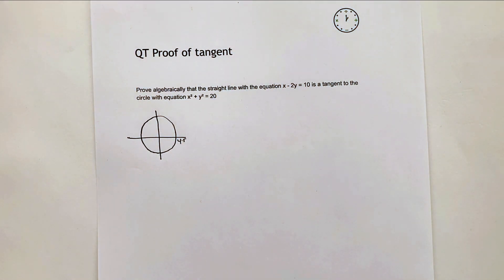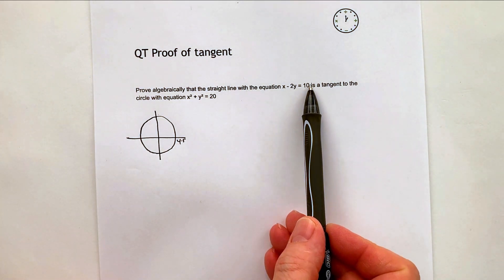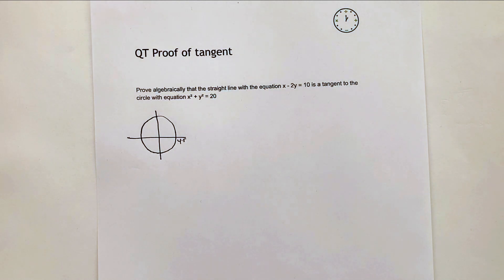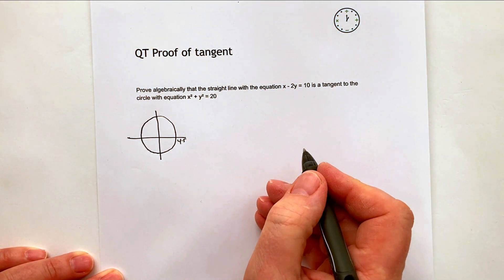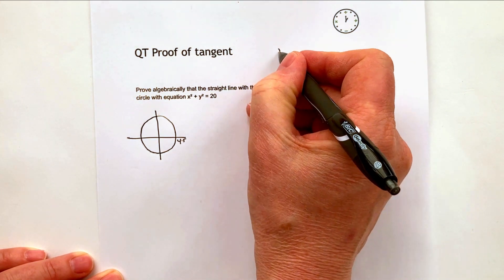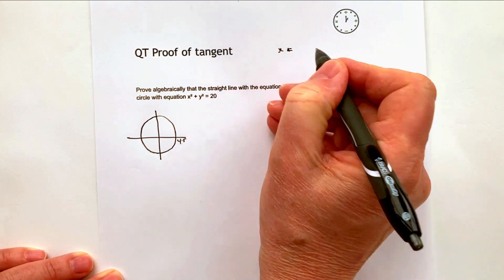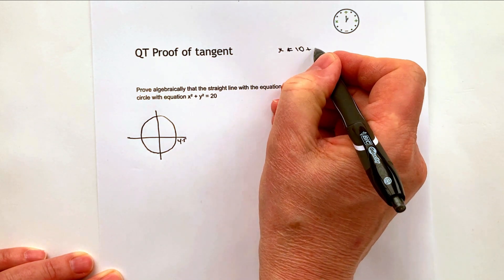So the radius of the circle is that, and then we've got this straight line which meets the circle at a tangent. The problem is that it doesn't look like a straight line when it's set out like that. So I'm going to rearrange that. I'm going to move this minus 2y to the other side, so I'm going to get x equals 10 plus 2y.